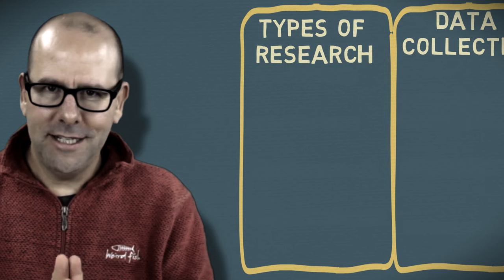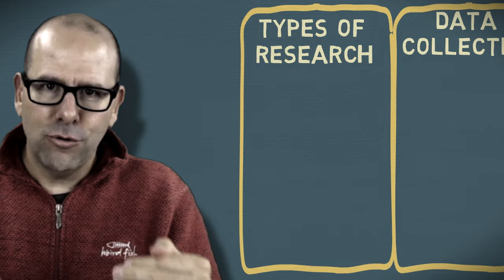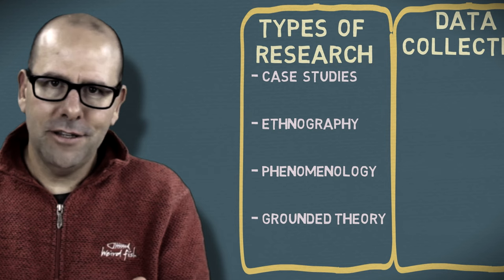There are many types of qualitative research. The four most commonly used types are case studies, ethnography, phenomenology, and grounded theory. Let's talk about each of these quickly.